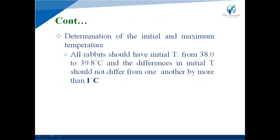The result of the pyrogen test: if no rabbit shows an individual rising temperature of 0.6 degree centigrade or more, the product meets the requirements for absence of pyrogen. If any rabbit shows an individual temperature rise of 0.5 degree centigrade or more, continue the test using 5 other rabbits. If no more than 3 of the 8 rabbits show individual rising temperature of 0.5 degree centigrade or more, and the sum of 8 individual maximum temperature rises does not exceed 3.3 degree centigrade, the material meets the requirement for absence of pyrogen.